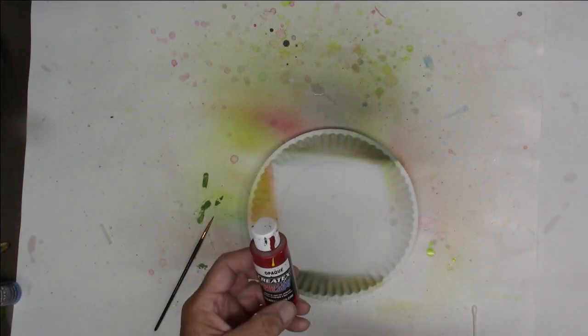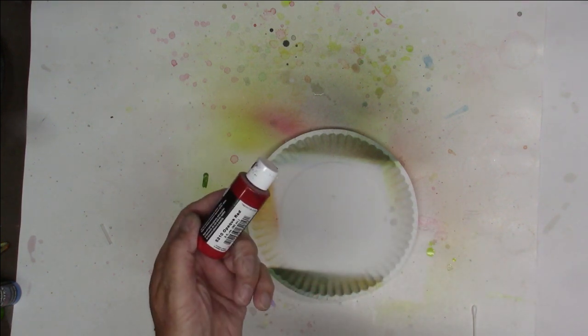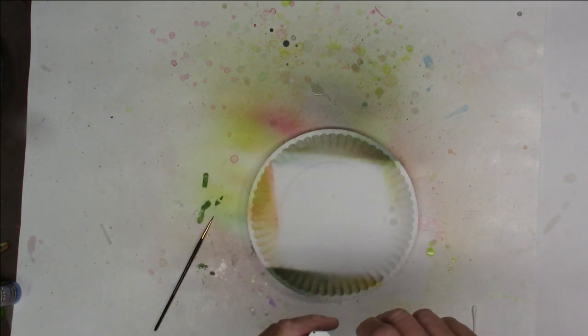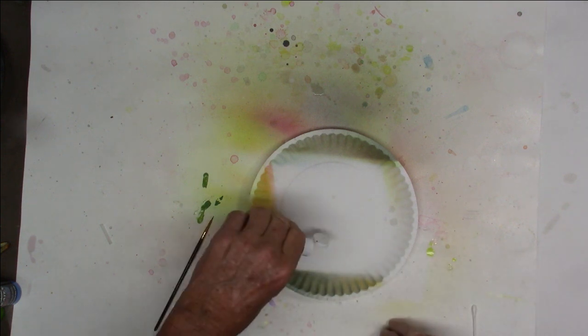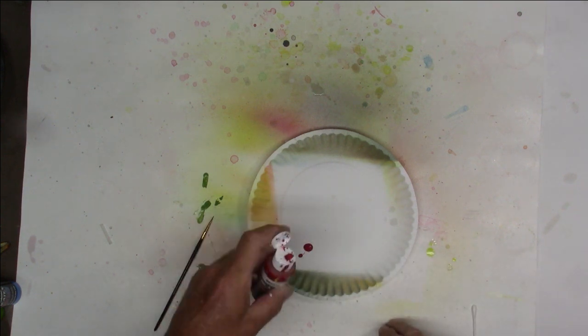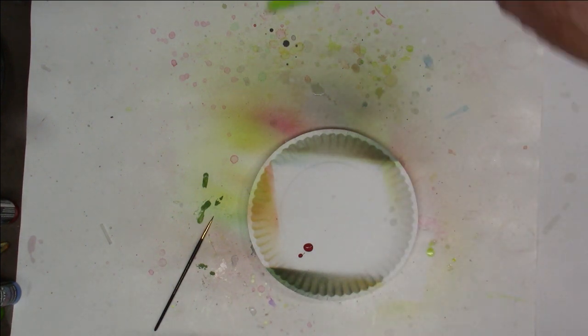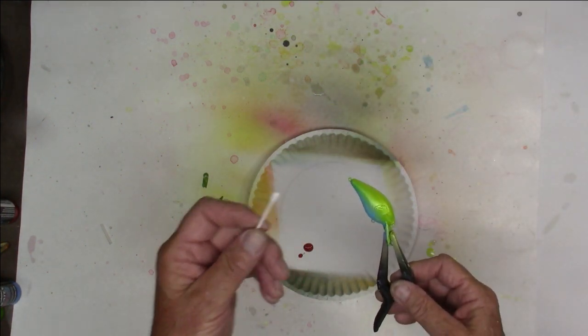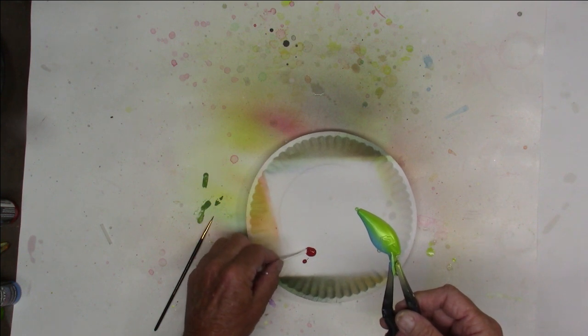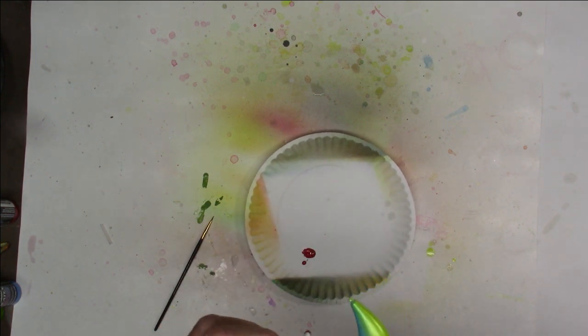We have one more step to take. That's Createx Opaque Red. Going to need a little of that. But this time, just put a little bit on the plate here. Going to go with the Q-tip. Just going to put some of that on the Q-tip.